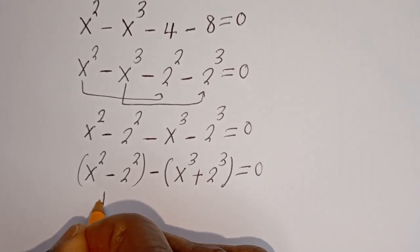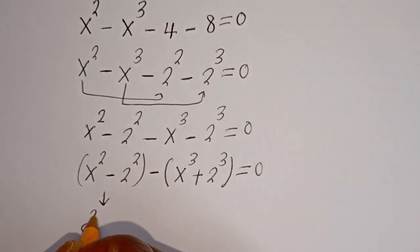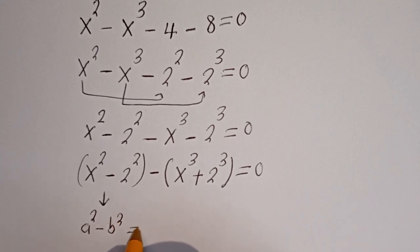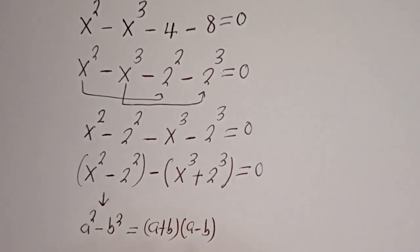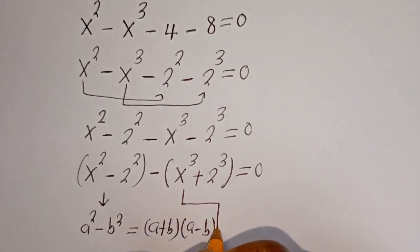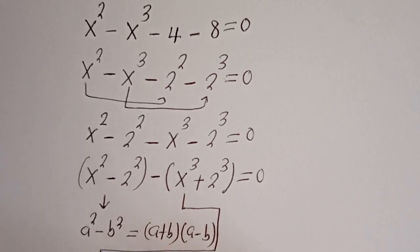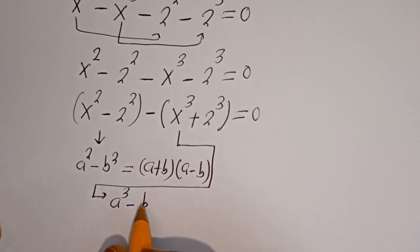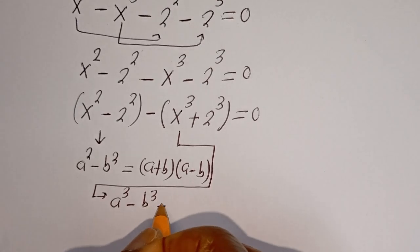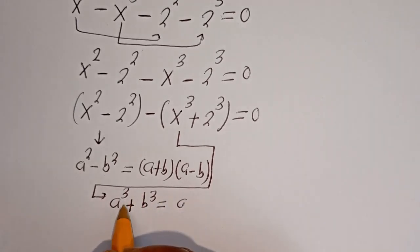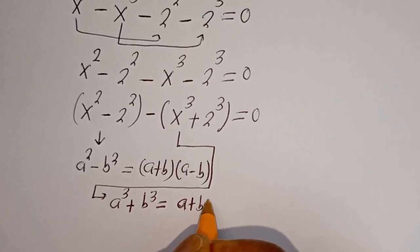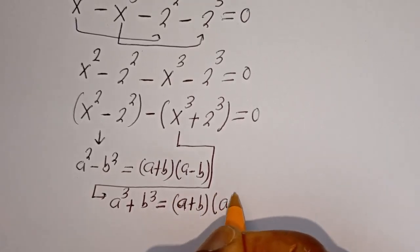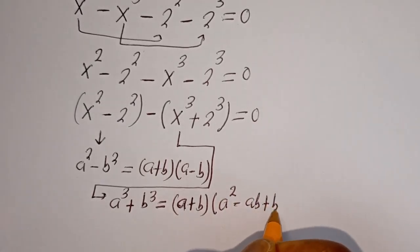Now this is in the form of a perfect square difference: a squared minus b squared equals a plus b bracket a minus b. And for sum of cubes: a to the power of 3 plus b to the power of 3 is equal to a plus b bracket a squared minus ab plus b squared.